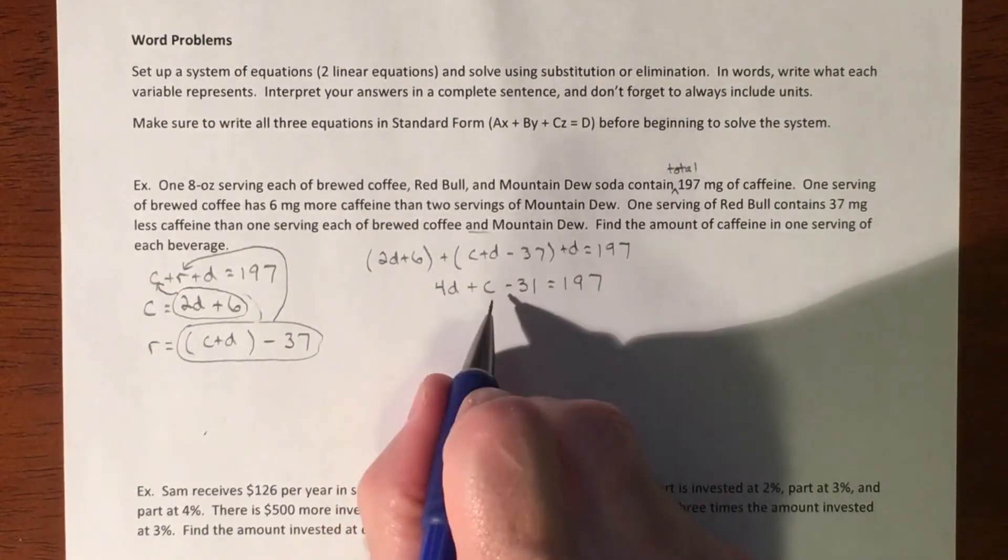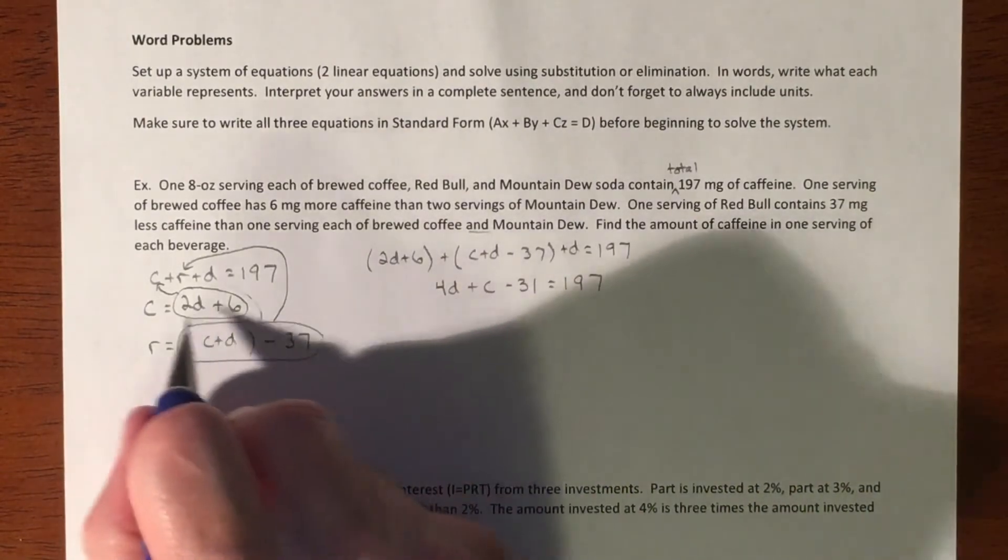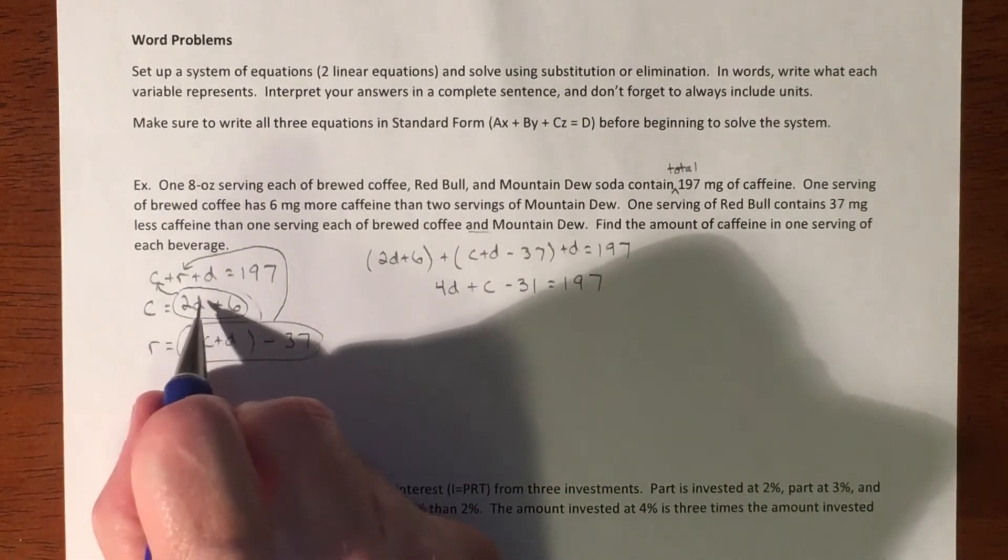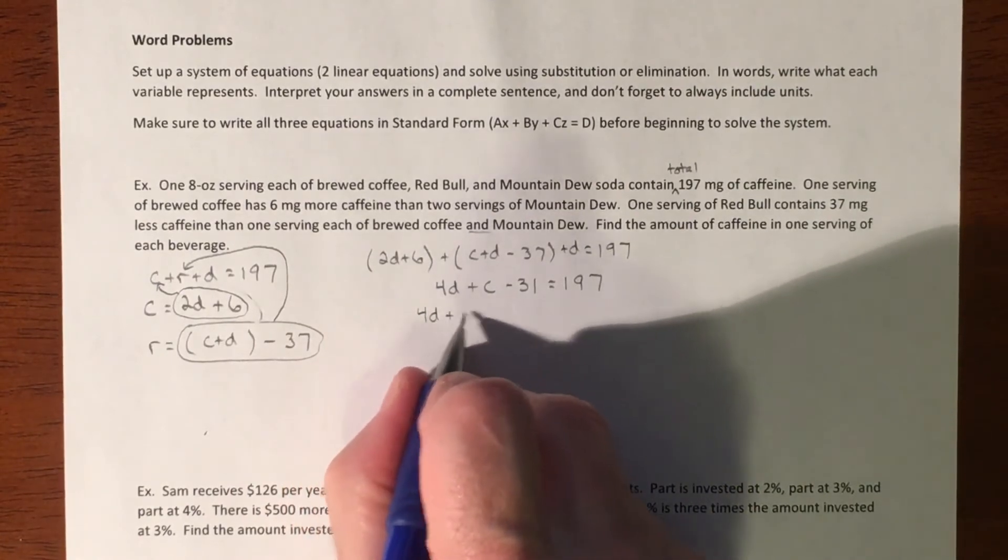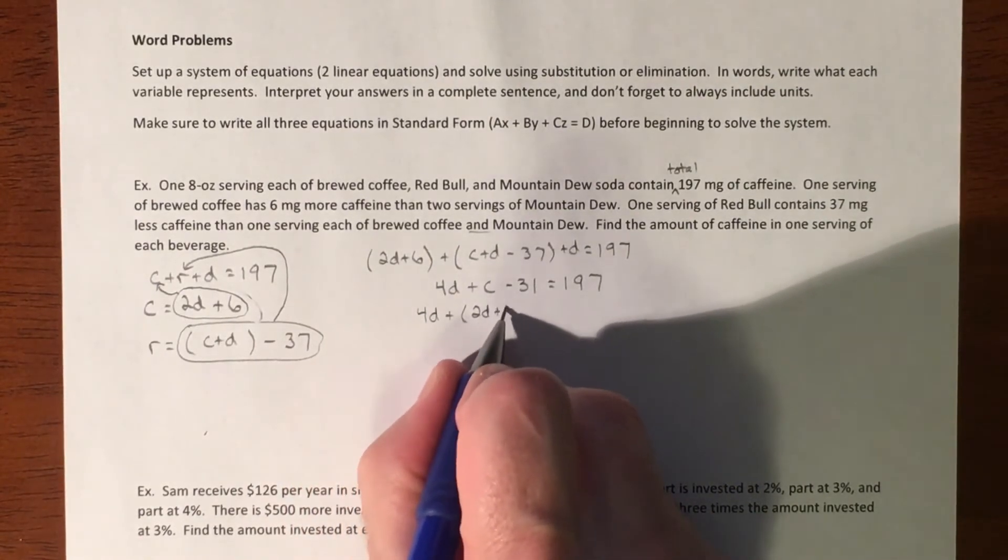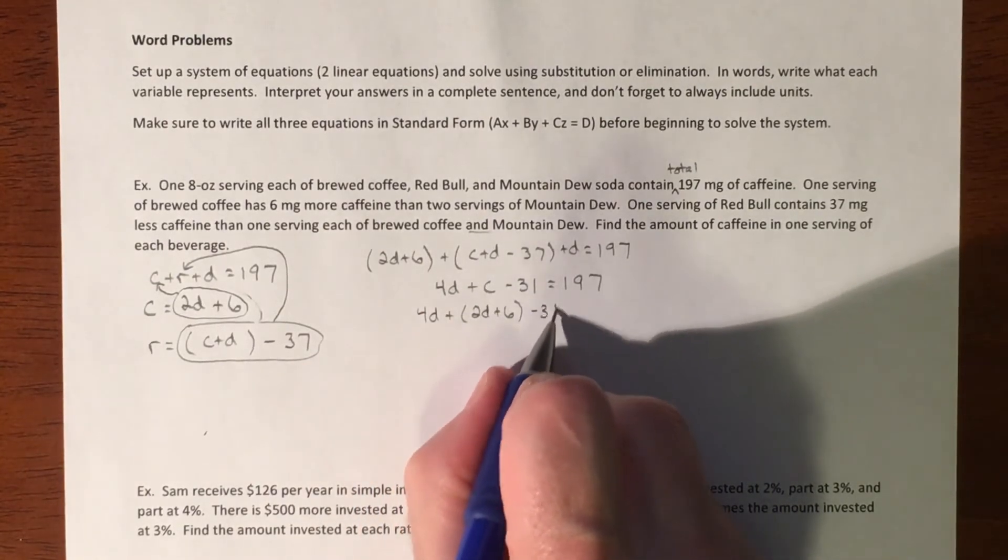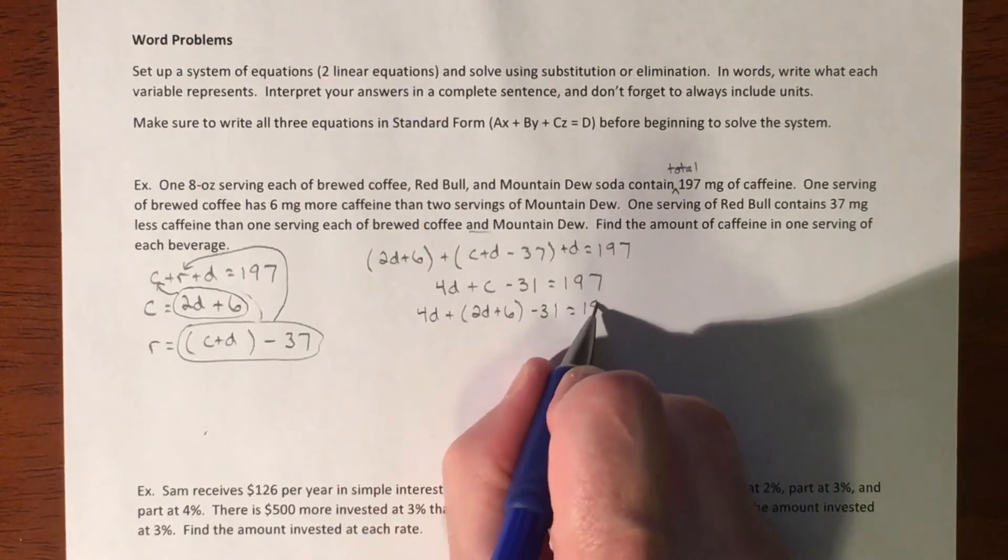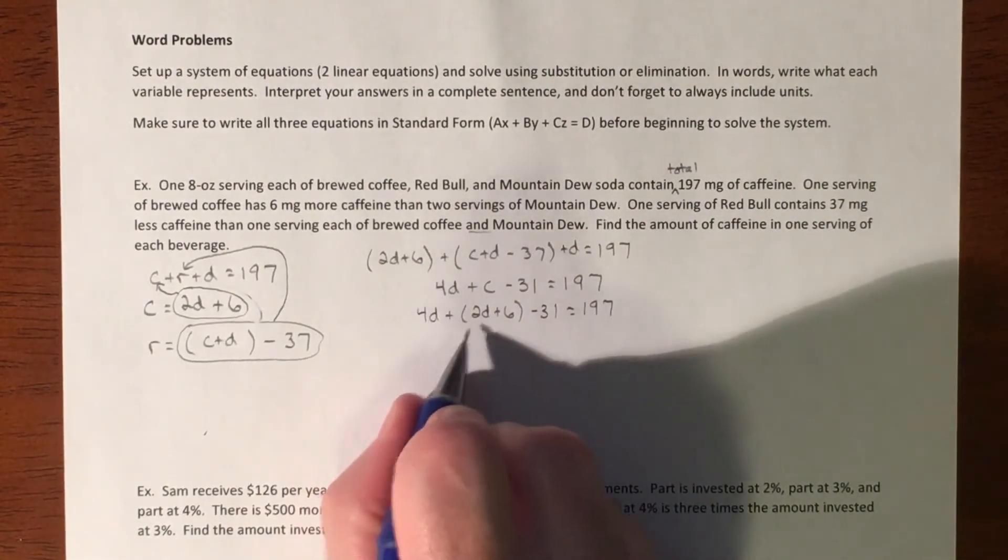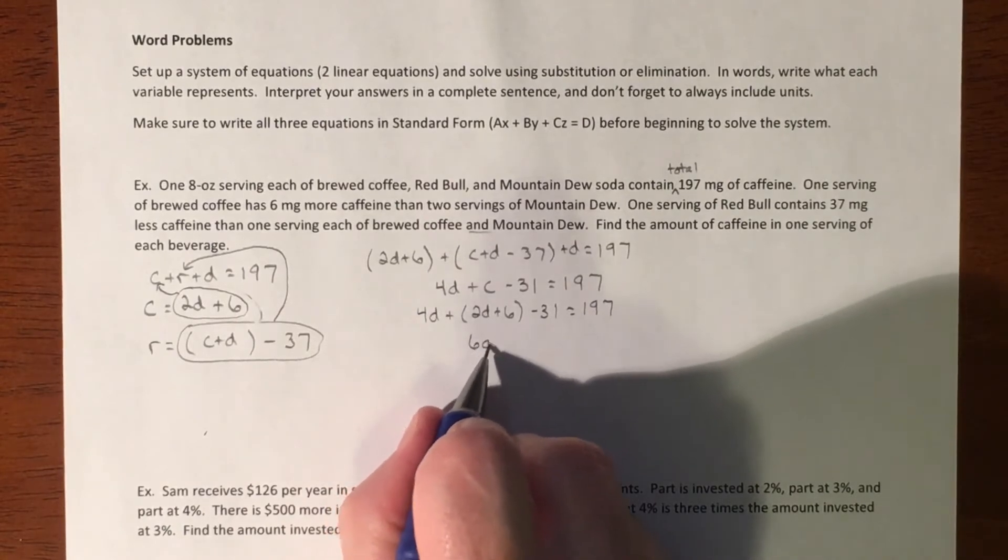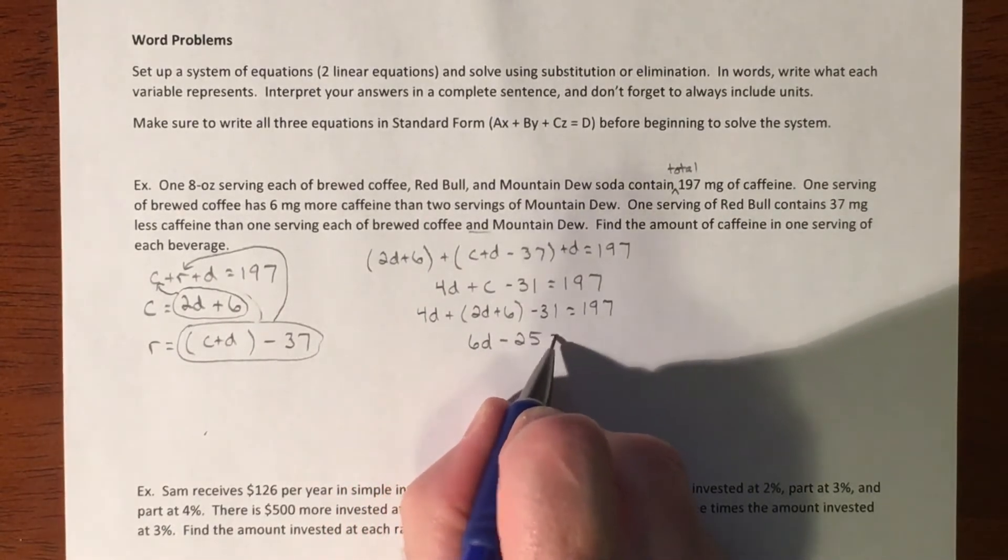So it would be nice if we can solve this and make it all into one variable, which we can because we can replace C and it's just a bunch of D's. So 4D plus we'll sub in that, so there's C minus 31 equals 197. So if we combine our like terms one last time here, so that's 6D and then these two are going to make a minus 25 equals 197.